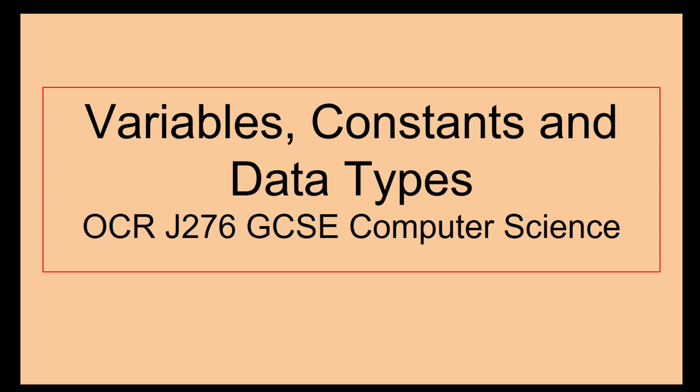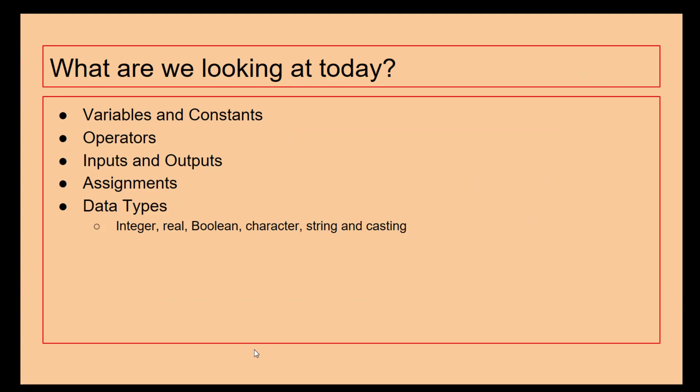Hello there and welcome to this OCR J276 GCSE computer science video where we are looking at variables, constants and data types. So in today's lesson we're looking at variables, constants, operators, inputs and outputs, assignments and different data types which you can see there.